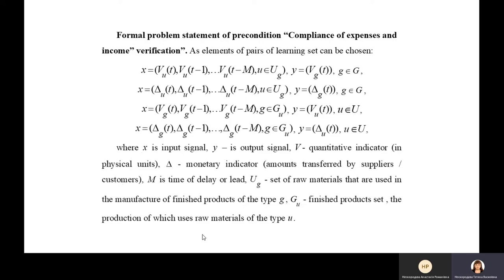M is time of delay or lead, O is set of raw materials that are used in the manufacture of finished products of the type G. G is finished product set, the production of each uses raw materials of the type O.